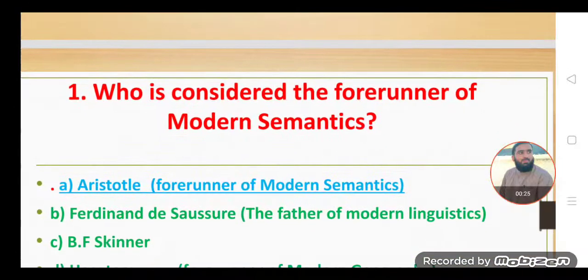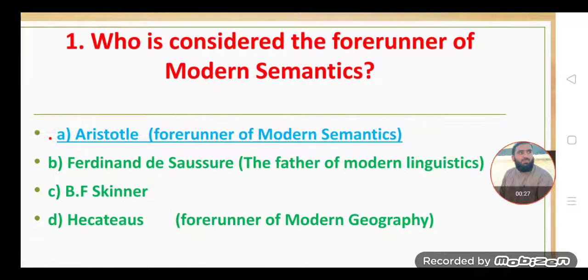Let's discuss these MCQs. Number one: Who is considered the forerunner of modern semantics? Option A is the correct option, dear students. Aristotle is considered the forerunner of modern semantics.